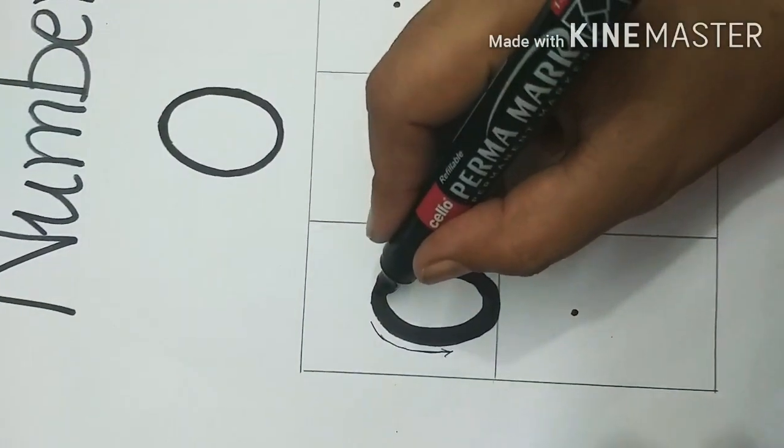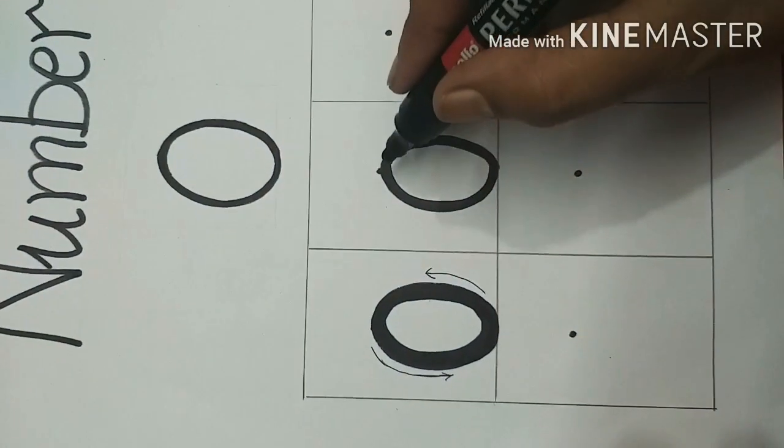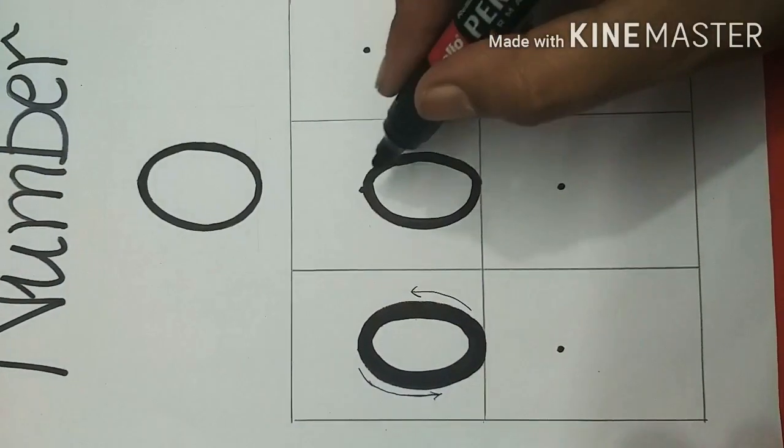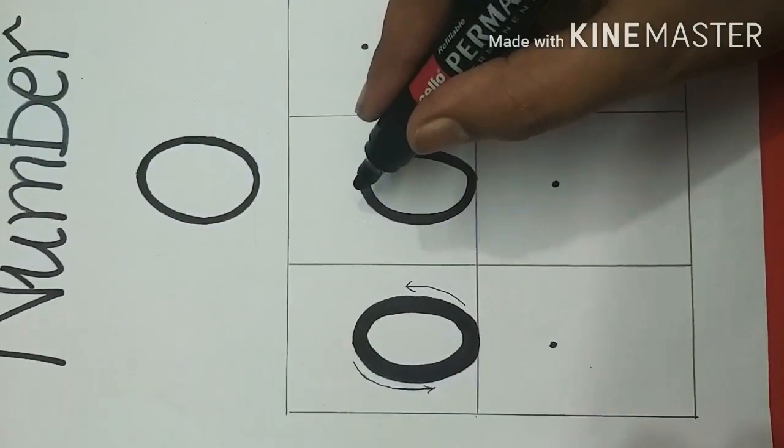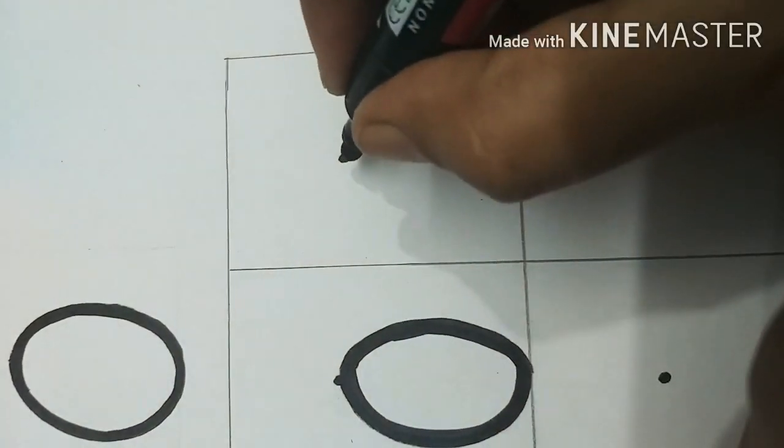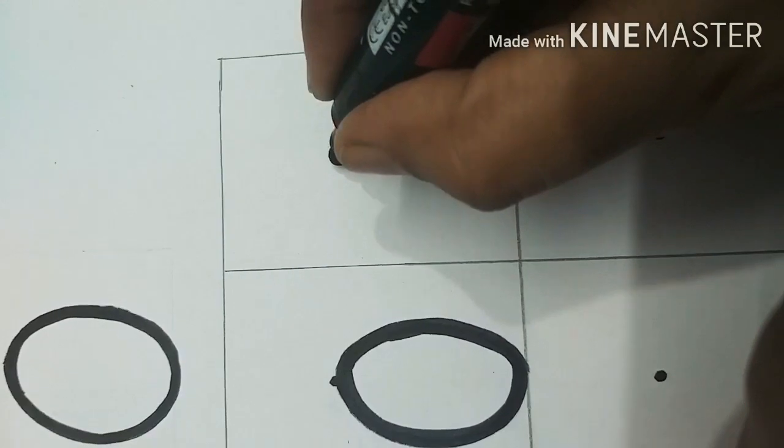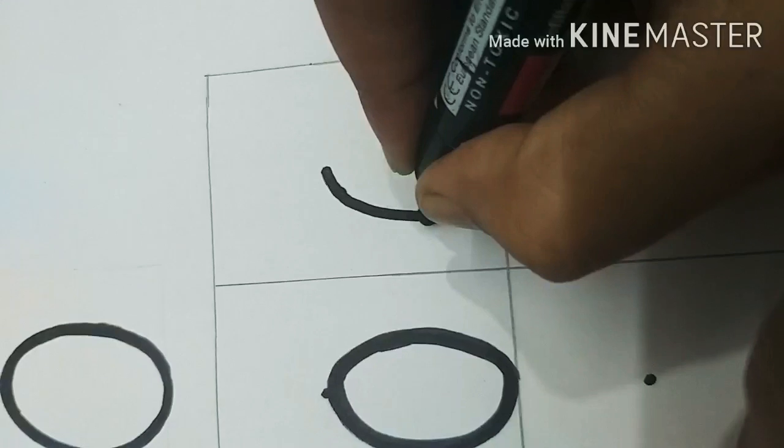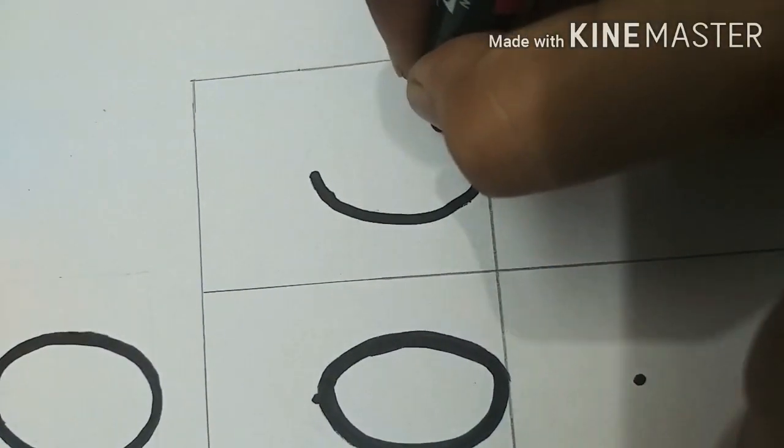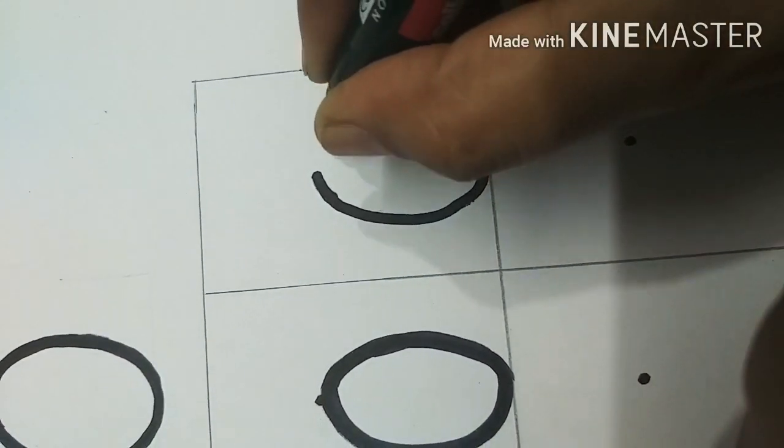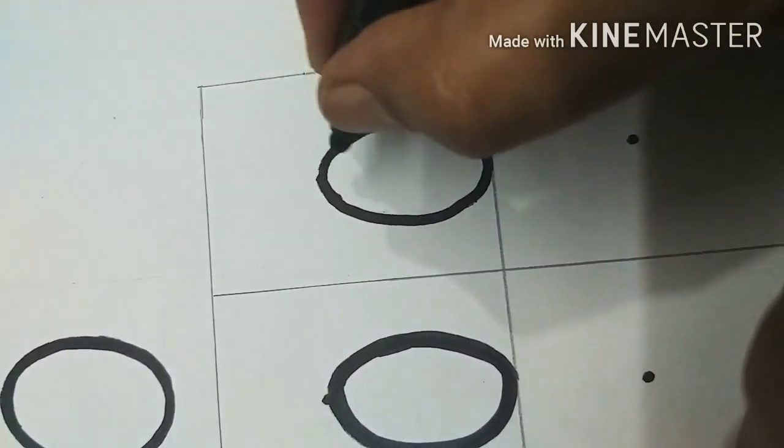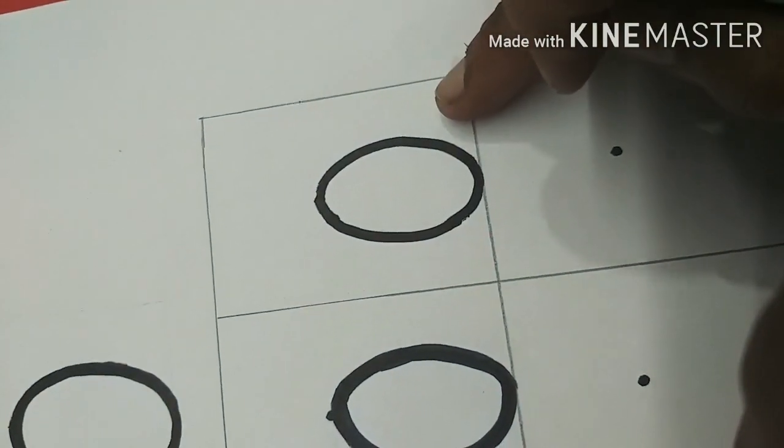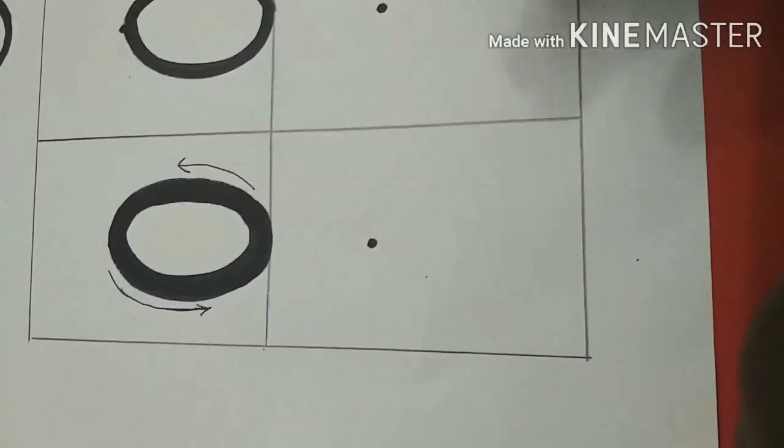Start at the top and go around. No straight line. Go all the way around. Let's write it. Make a curve. Go back to the top. This is number zero.